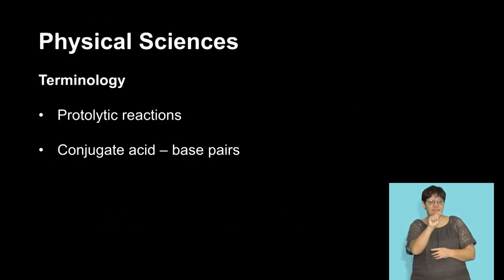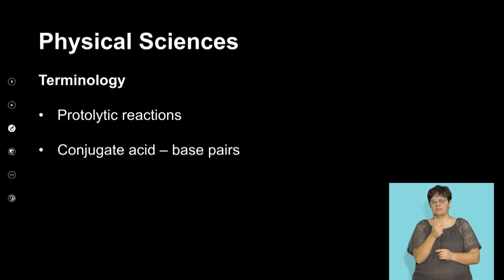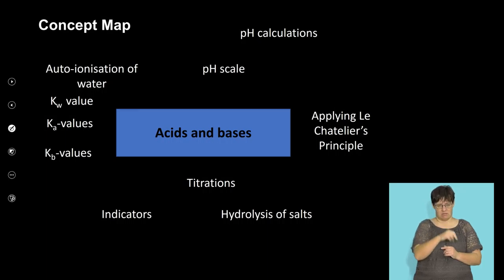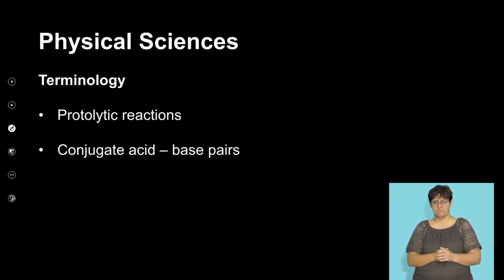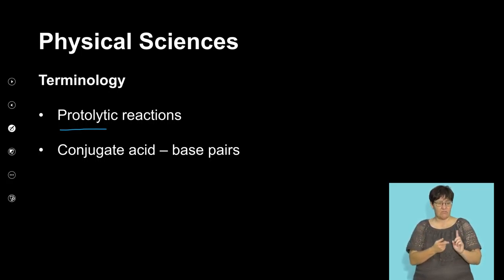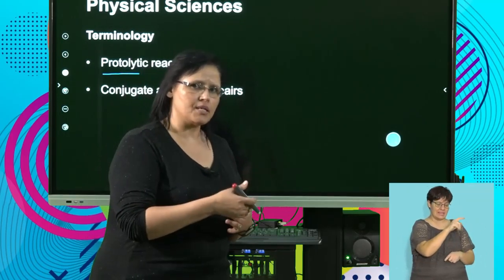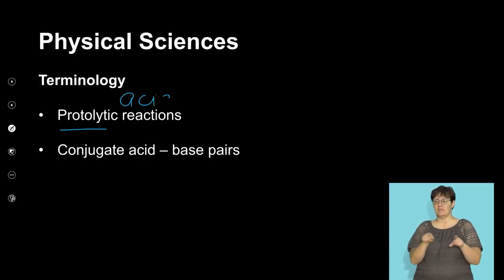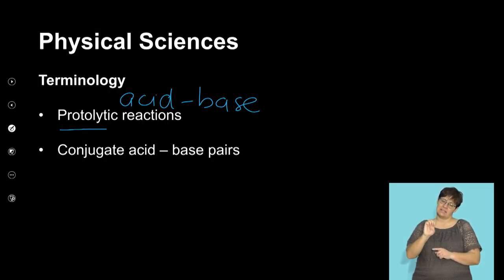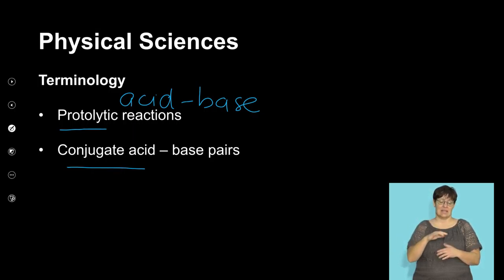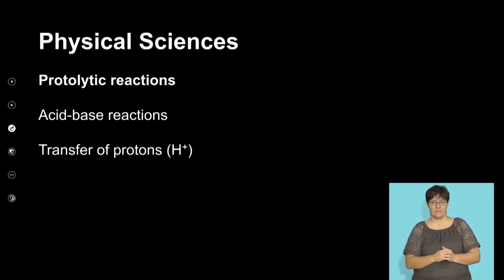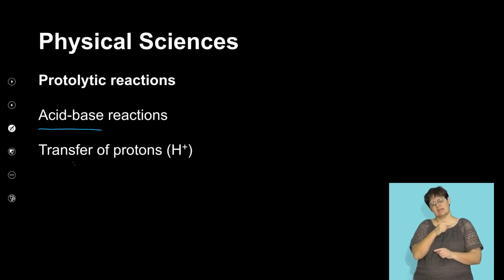Welcome back from the break. Before the break we were looking at titrations and the terminology of titrations. We are going to go on now and look at protolytic reactions. Protolytic comes from the word proton, and that basically means it's the transfer of a proton from the acid to the base. So a protolytic reaction is the same as an acid-base reaction. We will also use the words conjugate acid-base pairs — we will talk about a conjugate acid and a conjugate base.